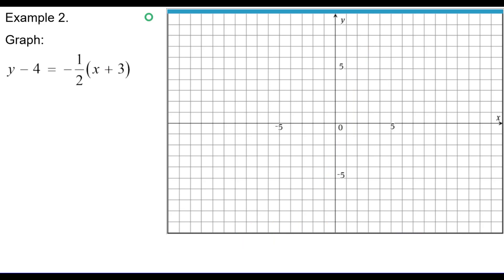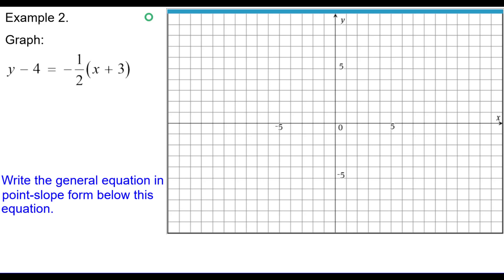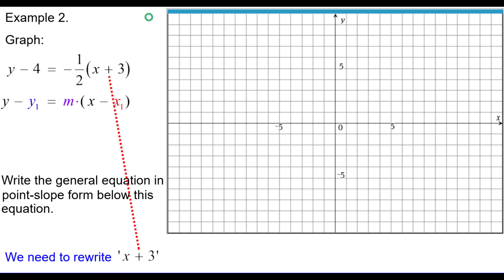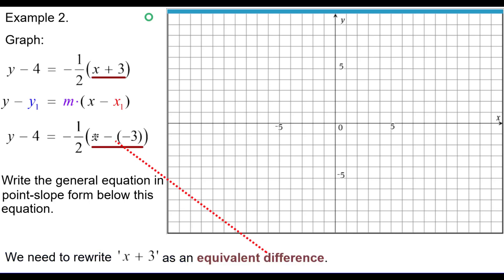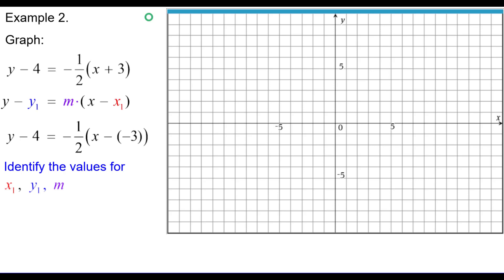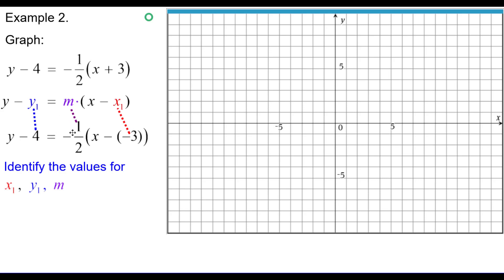Second example: graph y minus 4 equals negative one-half times the quantity x plus 3. We write the general equation below, but first we rewrite x plus 3 as an equivalent difference: x minus negative 3. Now identify the values: y sub 1 is positive 4, m is negative one-half, and x sub 1 is negative 3.